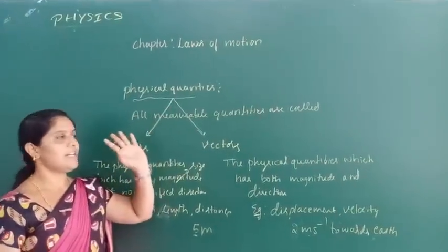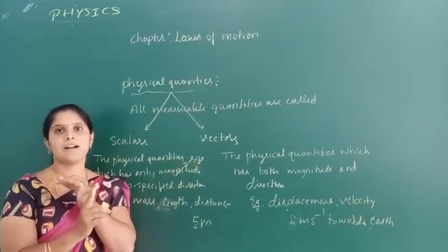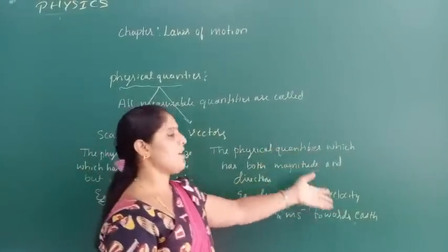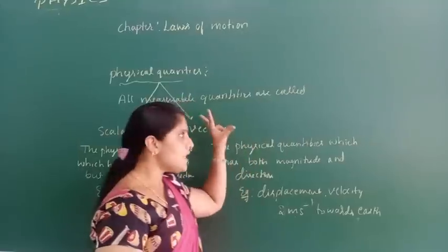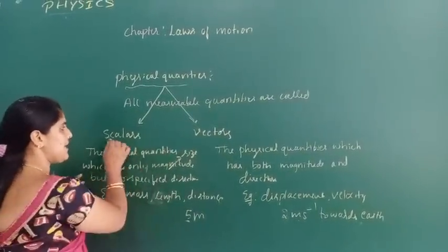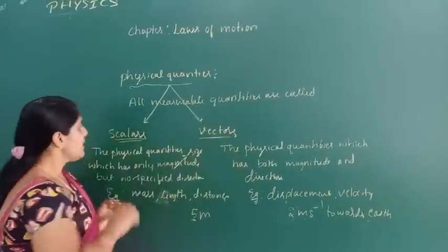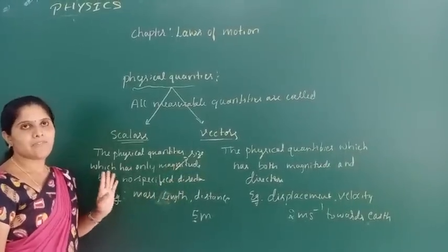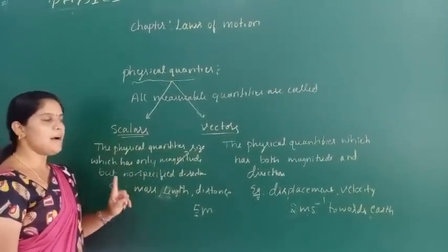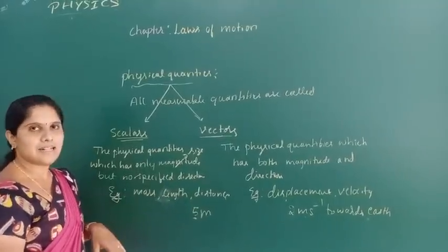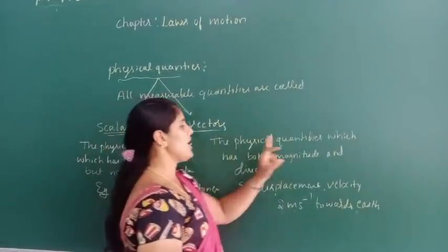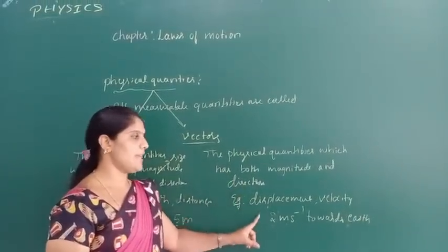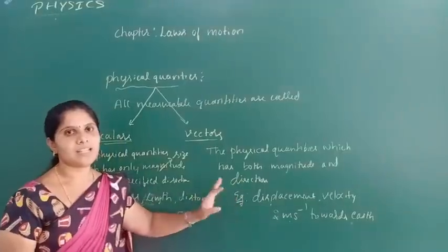What are the physical quantities? All measurable quantities are called physical quantities — for example, length, mass, distance, displacement, velocity, etc. These can be classified into two types: scalars and vectors. The physical quantity which has only magnitude but no specified direction is called scalar — for example, mass, length, distance. The physical quantity which has both magnitude and direction is called vector — for example, displacement, velocity, acceleration, force, etc.